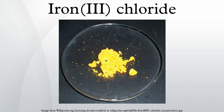Anhydrous iron chloride is deliquescent, forming hydrated hydrogen chloride mists in moist air. It is rarely observed in its natural form, known mainly from some fumaroles. When dissolved in water, iron chloride undergoes hydrolysis and gives off heat in an exothermic reaction.